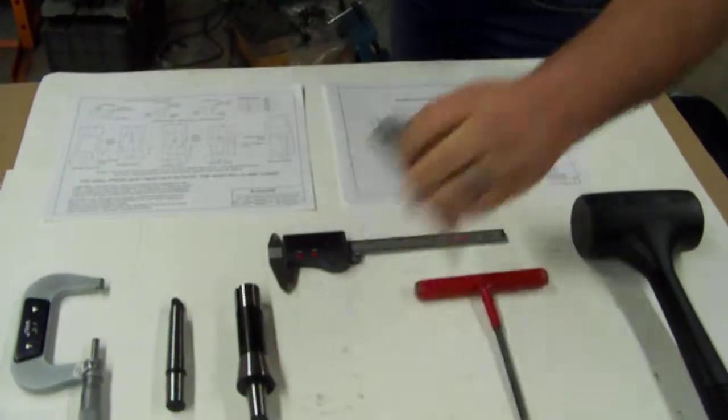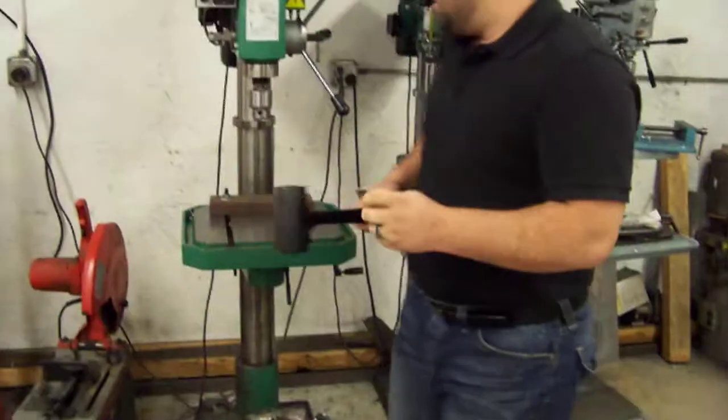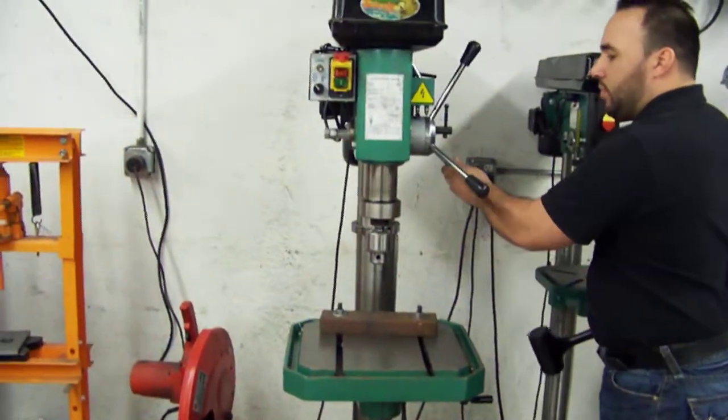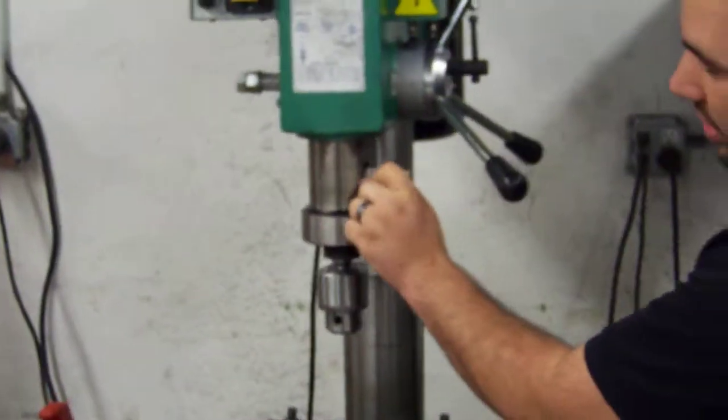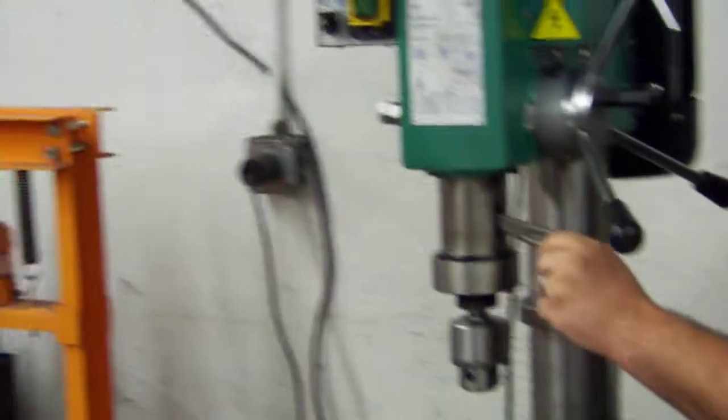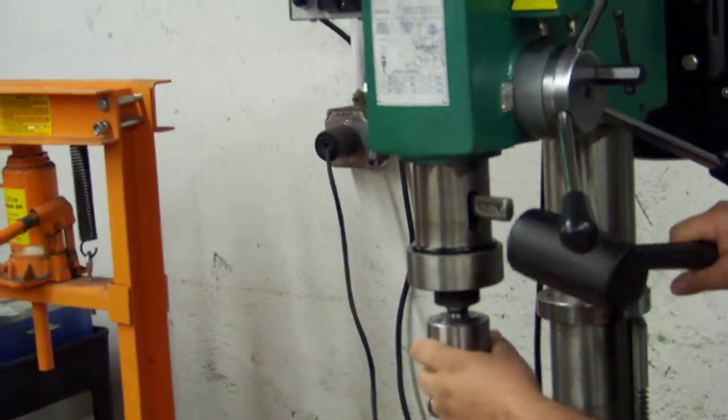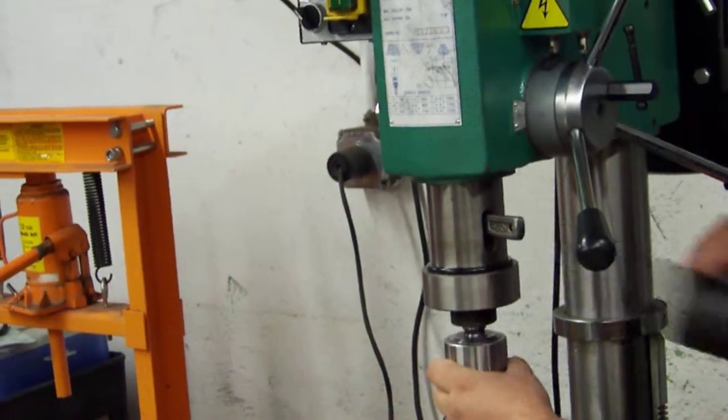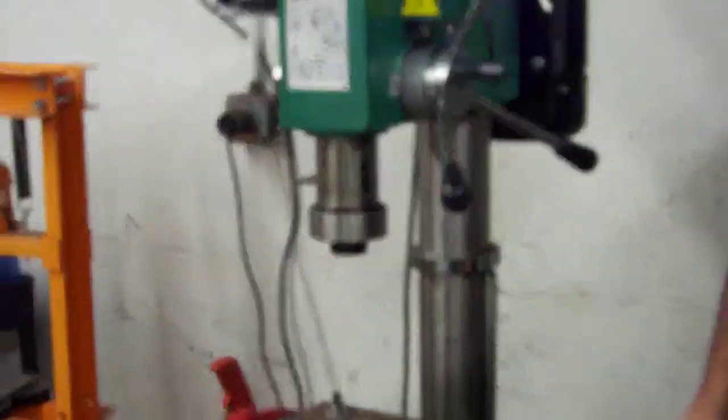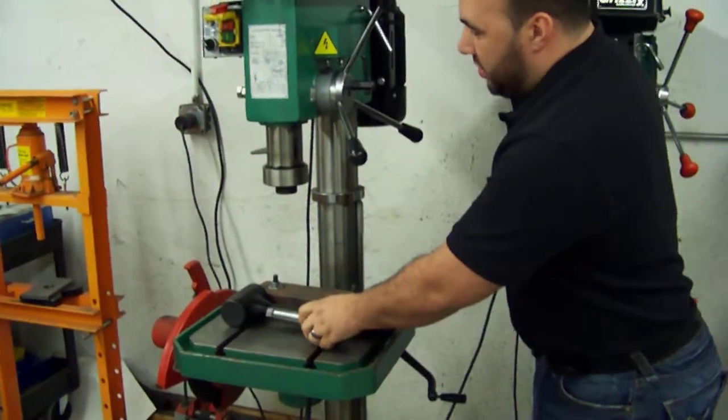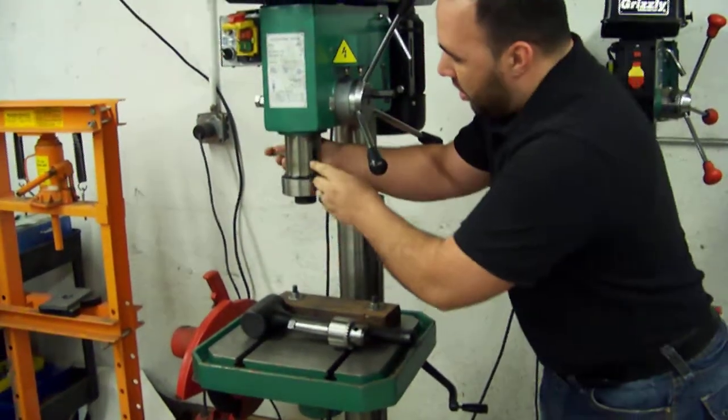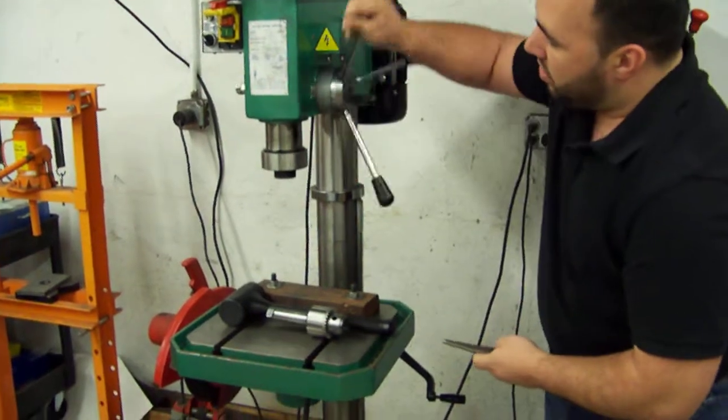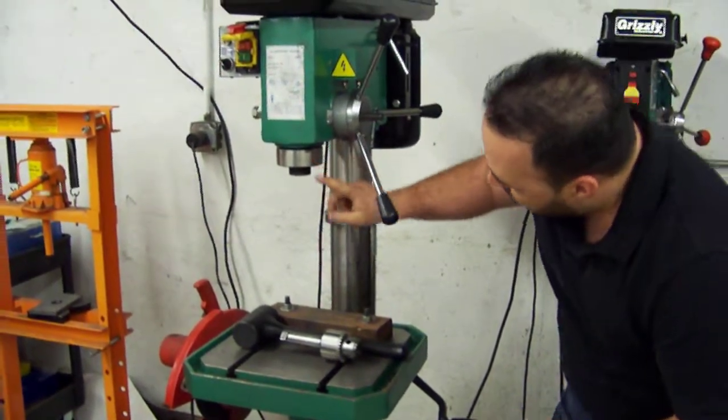With using a simple mallet and a key, you can just pop it in a slot here. By just banging on that, you simply take out the Morse taper out of a drill press and get the dimensions that you need right here and then here.